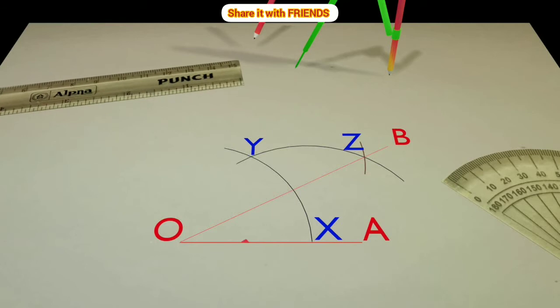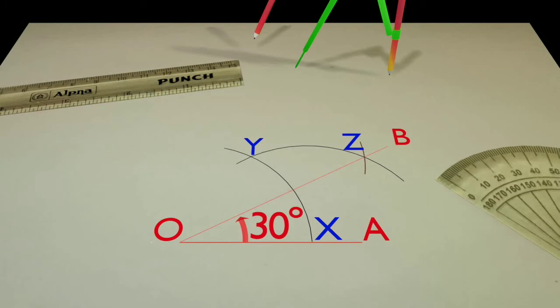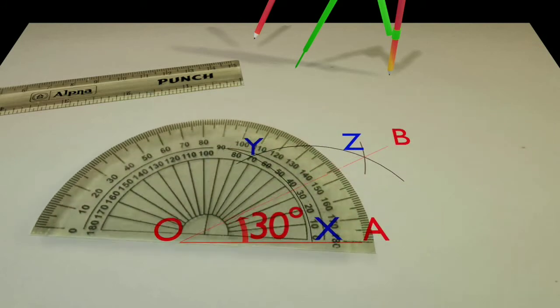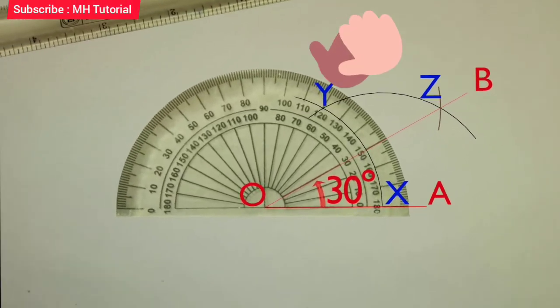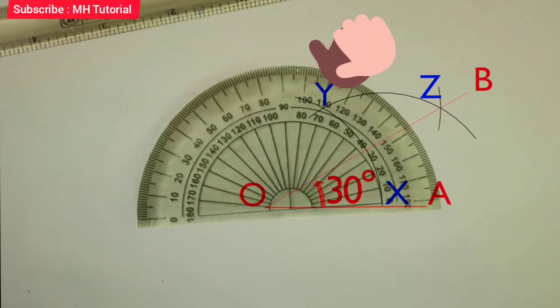Thus, the angle AOB is a 30 degrees angle. Is it 30 degrees or not? Let's verify with the help of a protractor. This line segment is drawn with the tip of the compass. Regular exercise with better geometry instruments can bring perfection.